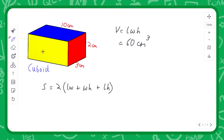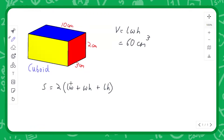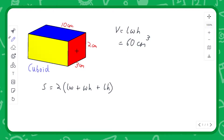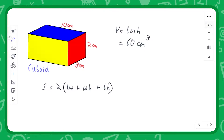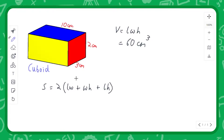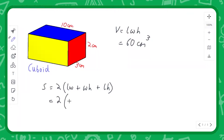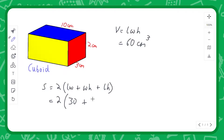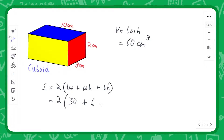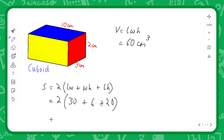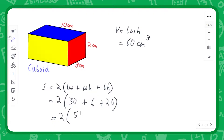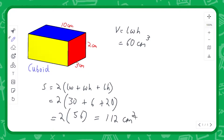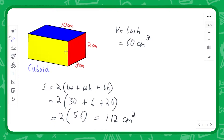You've got the top, bottom, right, left, front, and back — which is where this 2 comes in. With L×W, W×H, L×H you're getting the rectangular areas of the red, blue, and yellow faces, then doubling them for the back, the bottom, and the left. So we've got 2 times: length times width is 30, width times height is 6, and length times height is 20. Two lots of 30 plus 6 plus 20 is 56, and so the final answer is 112 centimetres squared for the surface area of this cuboid.